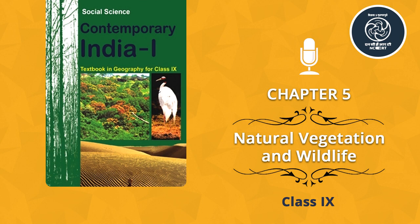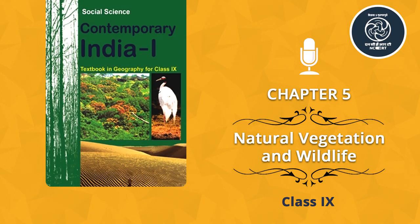Exercise Question 1: Choose the right answer. (1) To which type of vegetation does rubber belong? A. Tundra, B. Tidal, C. Himalayan, or D. Tropical Evergreen. (2) Cinchona trees are found in areas of rainfall more than: A. 100 cm, B. 50 cm, C. 70 cm, or D. less than 50 cm. (3) In which state is the Simlipal bio-reserve located? A. Punjab, B. Delhi, C. Odisha, or D. West Bengal. (4) Which one of the following bio-reserves of India is not included in the world network of bio-reserves? A. Manas, B. Nilgiris, C. Gulf of Mannar, or D. Nanda Devi.